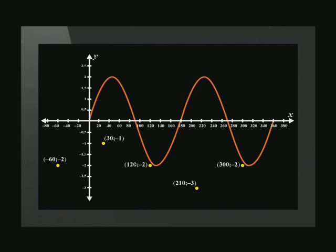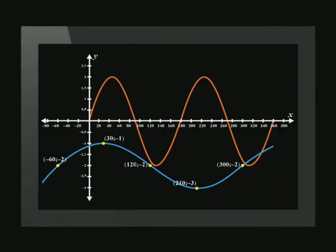Let's plot these points. Here are the plotted points on the same set of axes as the previous question. The question only wants us to draw the graph between 0 and 360 degrees. Can you see how the graph has shifted to the left and is 2 units lower than the standard sine function?